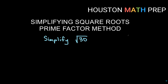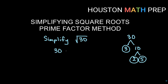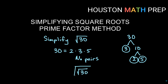Moving on to square root of 30. If I think of 30 as 3 times 10, then 10 breaks into 2 times 5. Writing the prime factorization in order from smallest to biggest: 2 times 3 times 5. You'll notice that nothing has a pair — there are no pairs here, so nothing can be pulled out of the root. Square root 30 is as simplified as it will get, and we just leave it as square root 30.